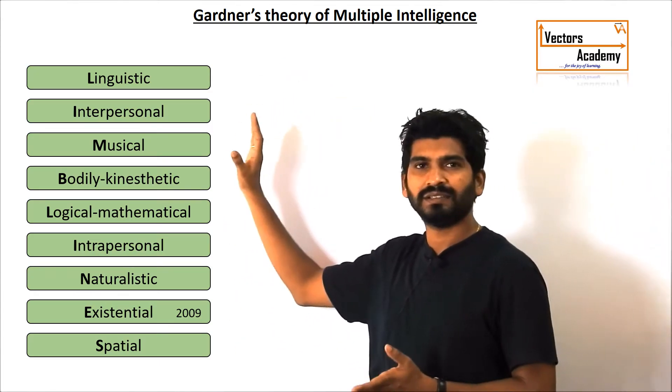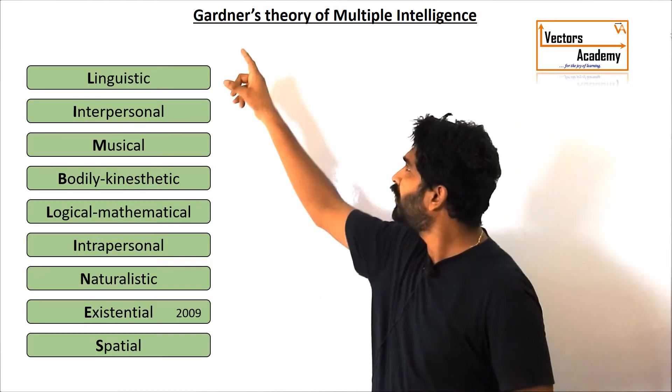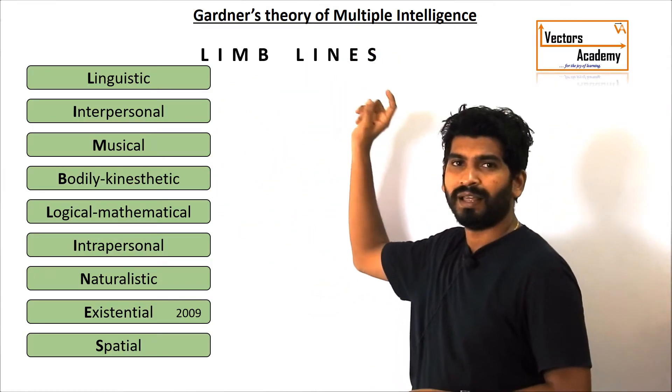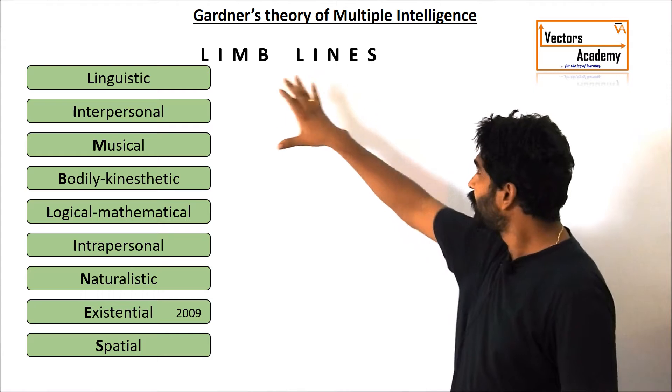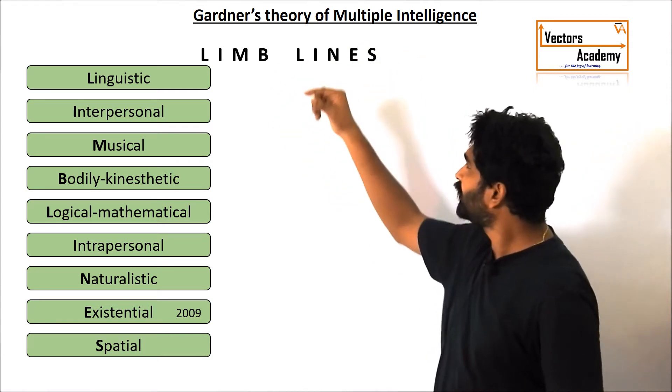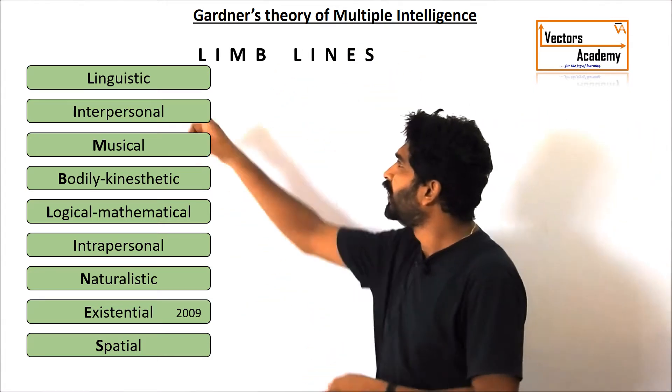Now to remember these intelligences we can have a simple word: limb lines. So we can remember all the intelligences. Now we will look at these one by one. Now limb lines.